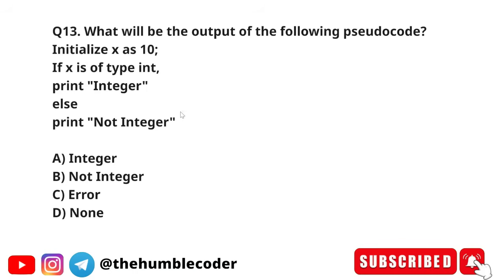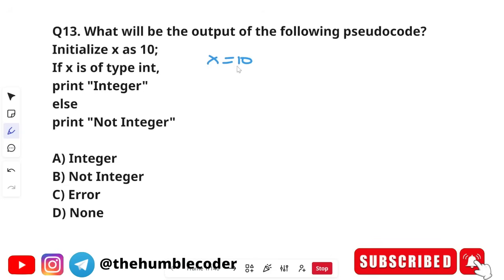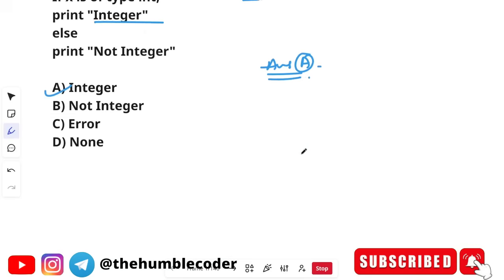Question 14: What will be the output of the following pseudo code? Initialize x as 10; if x is of type int, print 'integer', else print 'not integer'. Since x = 10 is a whole number, it is an integer, so it will print 'integer'. The correct answer is option A — integer.